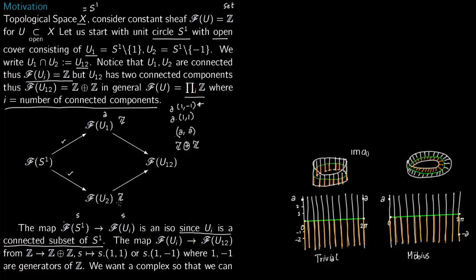So we have constructed this. You have either A mapping to (A, 1)·(−1) or A mapping to (A·1, 1). Similarly, for B from U2, you either get B mapping to (B, 1, 1) or (B, 1, −1). You make a choice of generator: either 1 or −1. This is obvious because U1 contains U12, so if it takes value A on U1 it must take value A on both components of U12. Similarly for U2. This is how we connect to vector bundles.